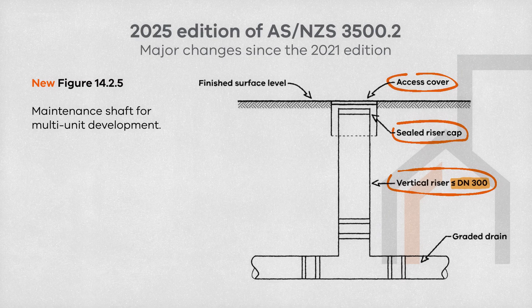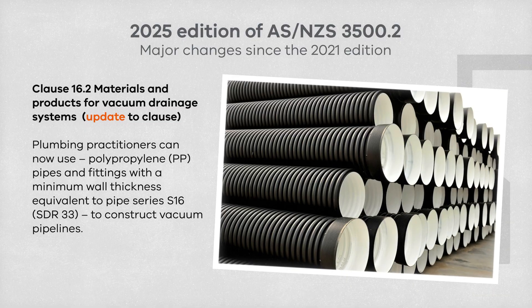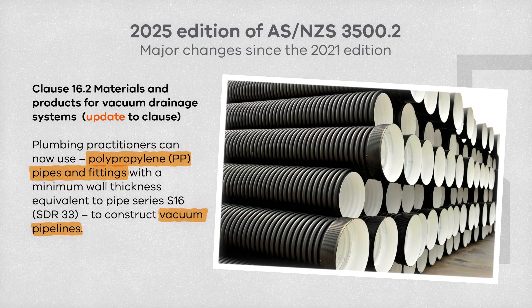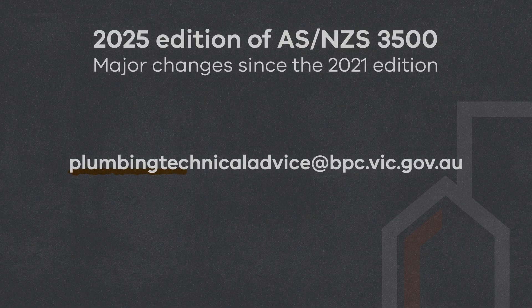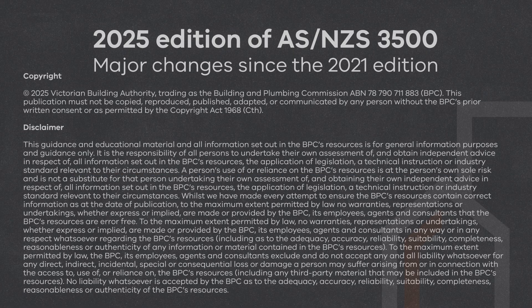Clause 16.2 now has an update where polypropylene pipes and fittings are included as an alternative material and product for vacuum drainage systems. That concludes the key updates to the 2025 edition of AS3500 Part 2. If you require further information or have any questions, please don't hesitate to email us at plumbingtechnicaladvice@bpc.vic.gov.au. Thank you and see you next time.